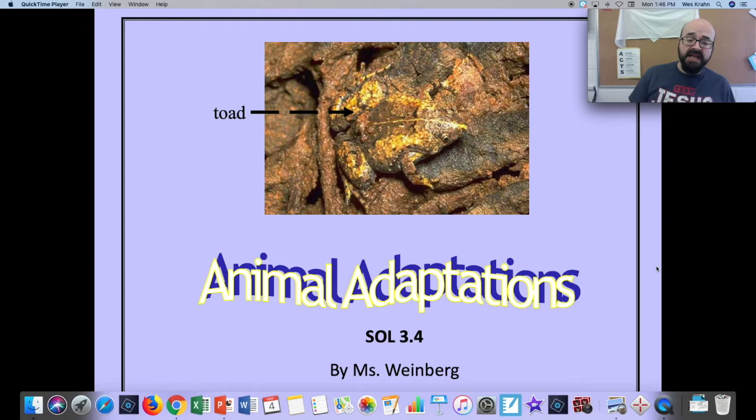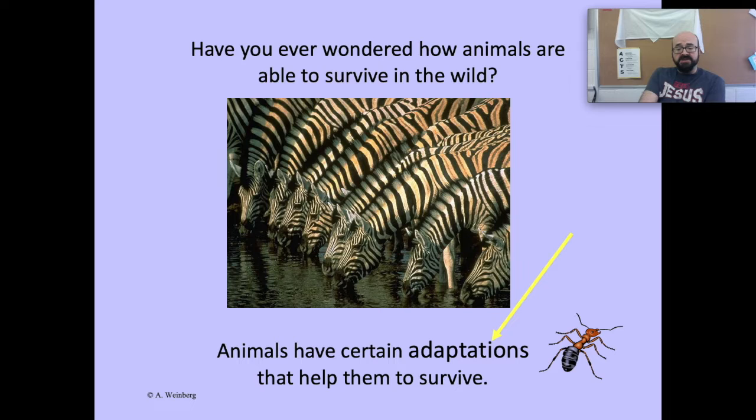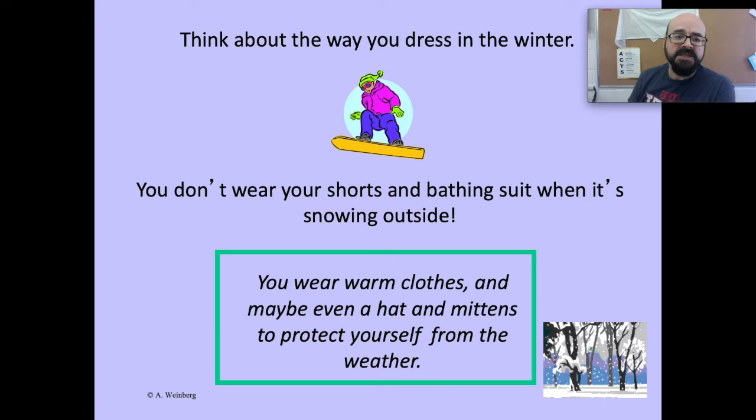This slideshow is called Animal Adaptations, and you can see there's a toad that is hidden here — that is actually an adaptation we'll be taking a closer look at today. Have you ever wondered how animals are able to survive in the wild? Animals have certain adaptations that help them to survive. We've got a picture of an ant and a picture of zebras with all their wonderful stripes.